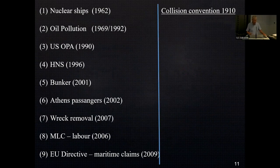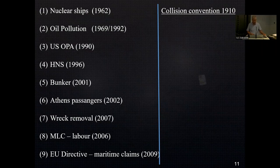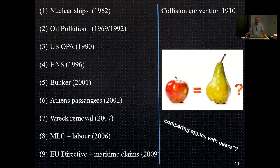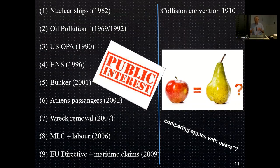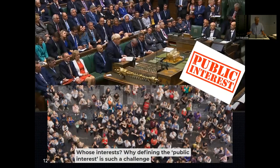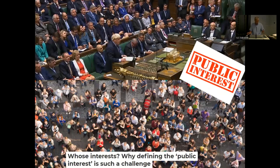Shall we go quickly through some of these. On public interest: on one side we have conventions which have mandatory insurance, and the collision convention is on the other side. So are we comparing apples with apples or apples with pears? The first argument is public interest — there is no public interest. But what is public interest? Whose interest is public interest? And why define public interest in such a way? It is simple: public interest evolves with civilization and culture.